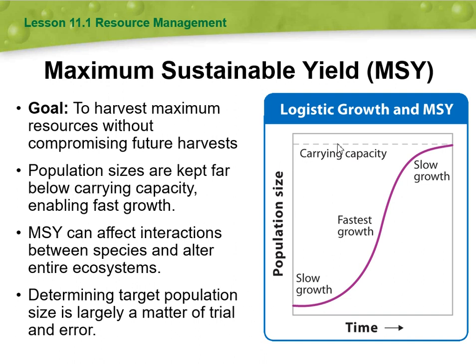As you can see here, we have the logistic growth and MSY. On the axes we have population size and time. The curve shows slow growth, then fastest growth, then slow growth again — and this is the carrying capacity. So we are trying to keep the population below the carrying capacity.